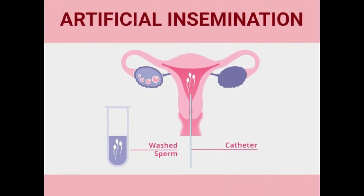The second in vivo method is artificial insemination or AI. In this method, semen from the husband or a healthy donor is collected and introduced into the vagina. This process is used when the male partner is unable to inseminate or has a low sperm count. Remember that both GIFT and AI are methods performed within the body.